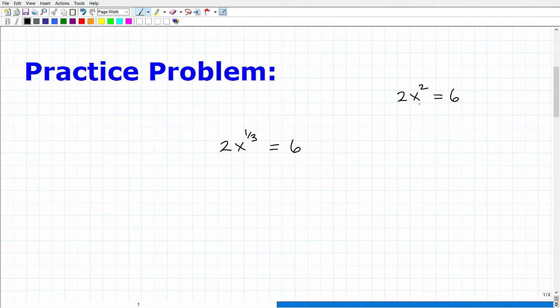Let's just eliminate that fraction as an exponent and make an easier version of a similar type of problem. If I had this, could you solve this problem? Let's solve this and then we'll get back to this problem. Here is our hint. We want to divide both sides by two. That leaves me with x² = 3.